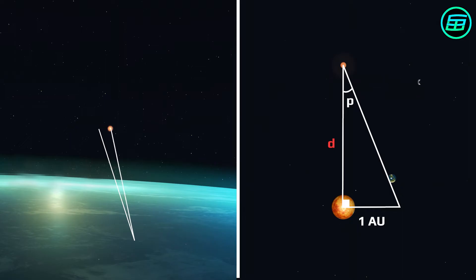If we observe a star twice in a year at six month intervals, we can measure the star's change in position and determine the parallax angle by using an instrument like a theodolite.